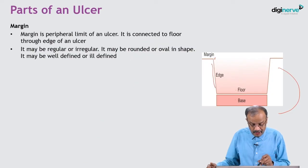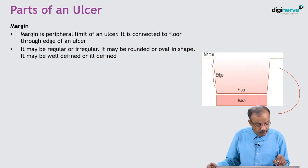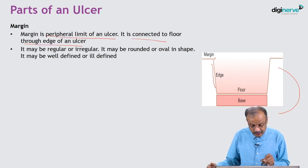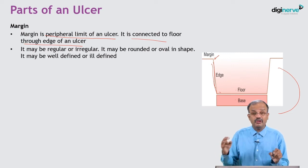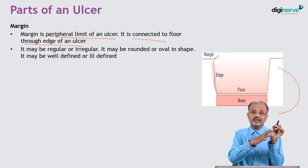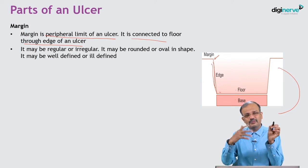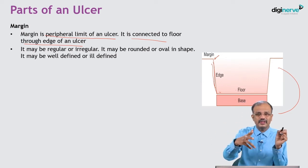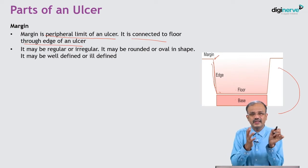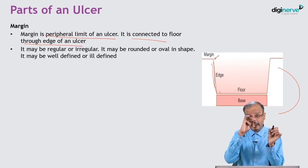The margin is the peripheral limit of an ulcer - the boundary between normal and diseased tissue that you can see. It is connected to the floor through the edge. The margin may be well-defined or ill-defined, and may be regular or irregular. In swelling, edge, border, and margin are almost synonymous, but here in ulcer examination, edge and margin are totally different - there is a clear-cut difference.